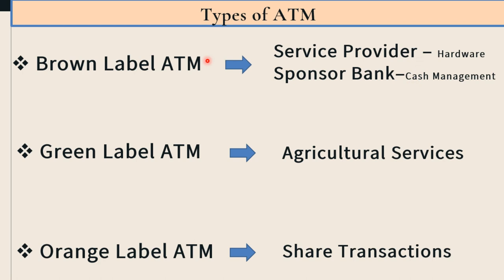The next type of ATM is Green-label ATM. The ATM which provides agricultural services — the ATM which is used for agricultural services — is known as Green-label ATM.